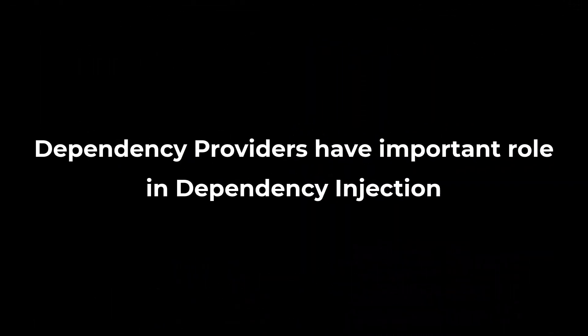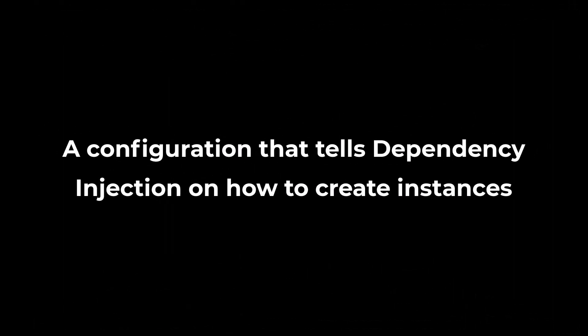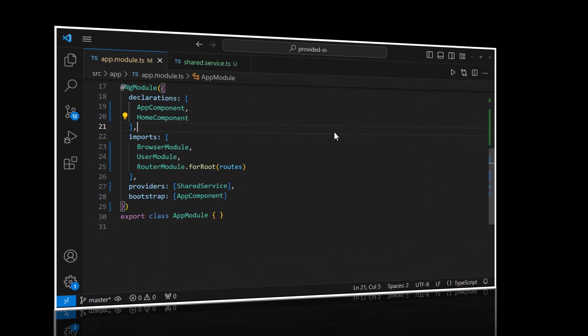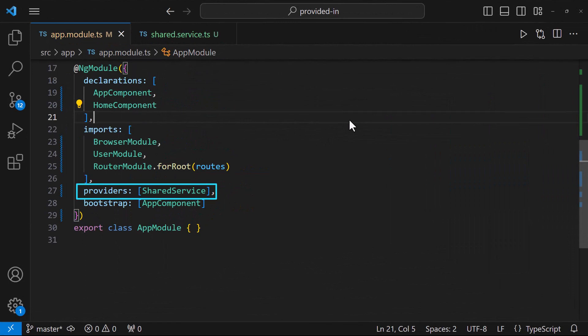In Angular, dependency providers play a crucial role in the dependency injection system. A dependency provider is a configuration that tells the Angular dependency injection system how to create and provide instances of certain objects such as services, components, and other parts of your application. In other words, the dependency provider is an instruction that describes how an object for a certain token is created. The Angular providers array is a collection of such instructions. Each provider is uniquely identified by a token in the providers array, also known as a dependency injection token.